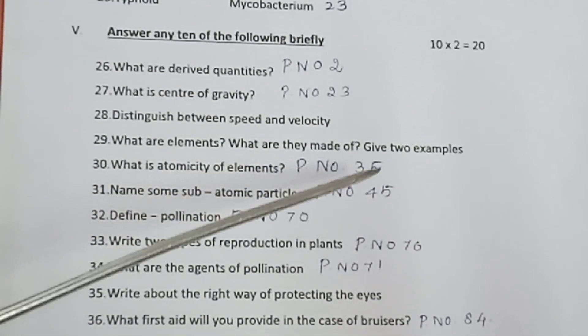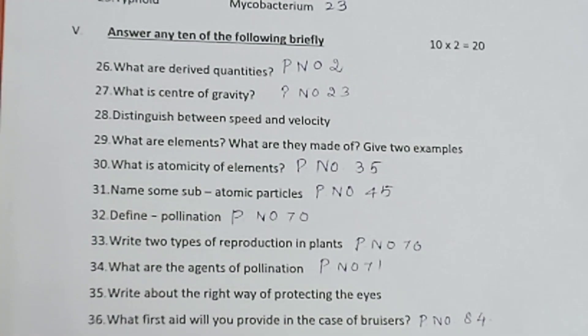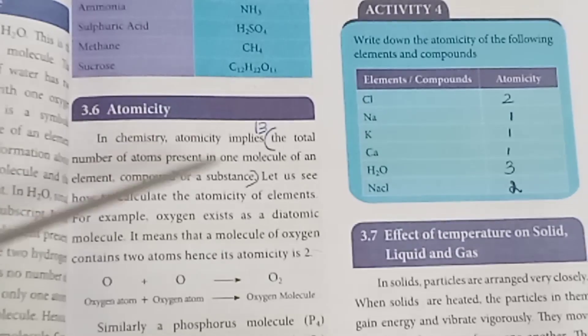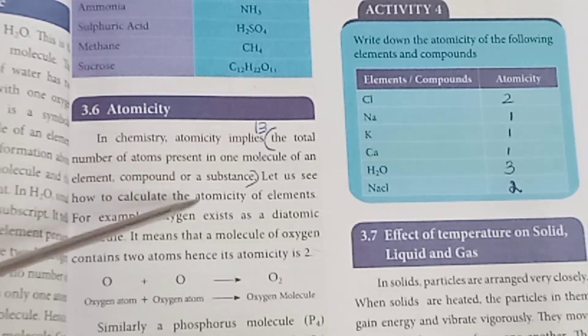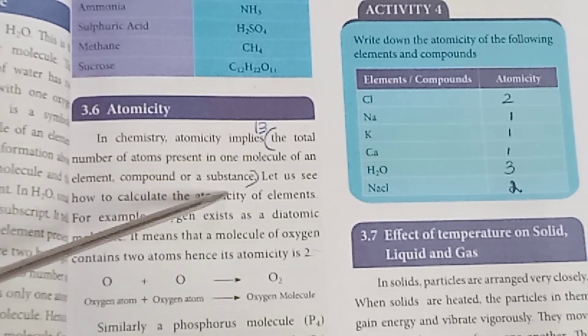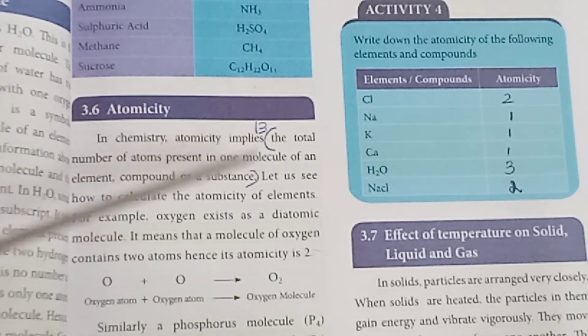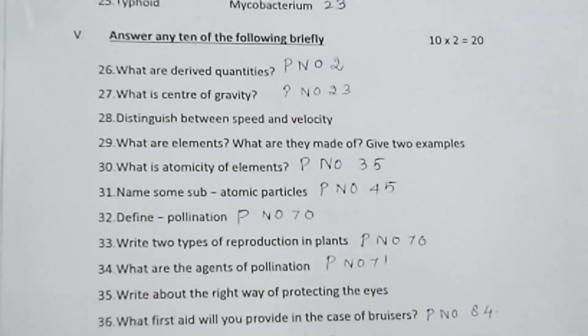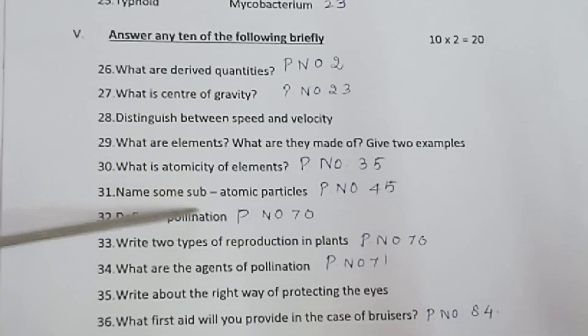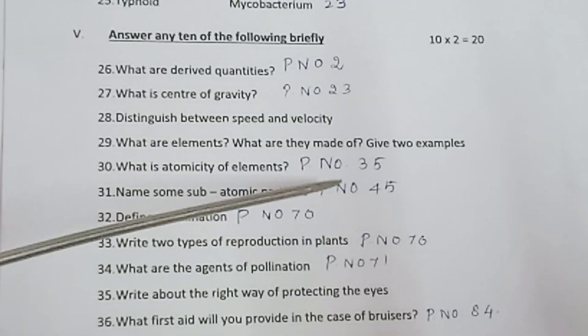Question 30: What is the atomicity of an element? Refer to page number 35. The atomicity is the total number of atoms present in a substance.